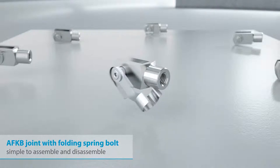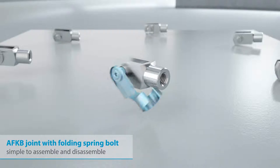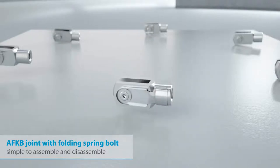This type of joint consists simply of a clevis and a corresponding folding spring bolt. One of the great advantages of this variant is that it is very simple to assemble and disassemble. The joint also generates very little noise due to the fixed connection between the parts.